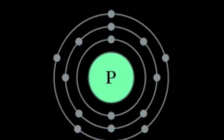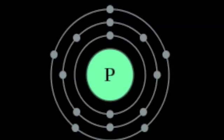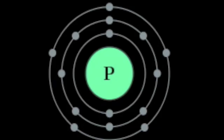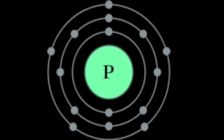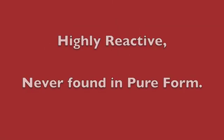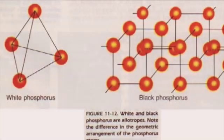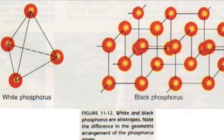Phosphorus' standard electron structure is 2 electrons in the first shell, 8 in the second, and 5 electrons in the valency shell. Having 5 valency electrons, phosphorus is highly reactive and is never found in pure form in nature.